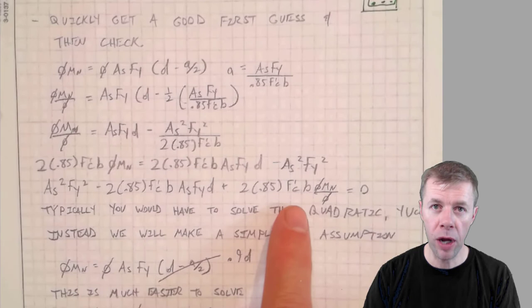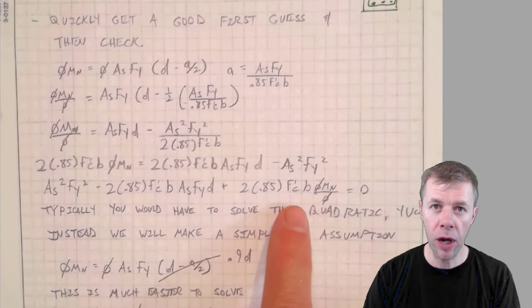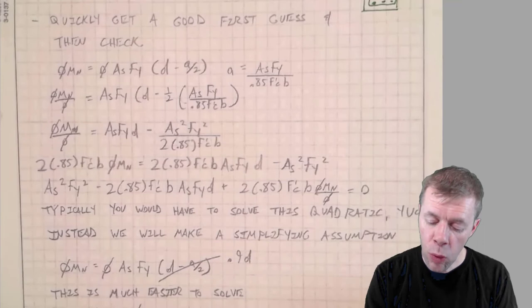If we know fy and d, if we know f'c, beta, phi, M over phi... if we know this and set it equal to 0 and we solved it, we could solve for our area of steel. This is kind of like solving a quadratic equation.